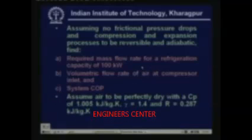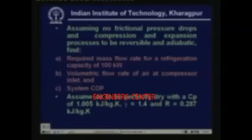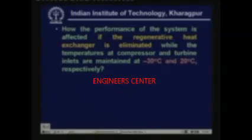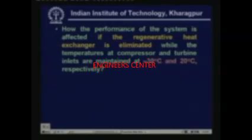For calculation purposes we assume air to be perfectly dry with a specific heat Cp of 1.005 kJ/kg·K, specific heat ratio gamma of 1.4, and gas constant R of 0.287 kJ/kg·K. The second part of the problem is to compare the performance of this system with a system which does not have a regenerative heat exchanger. For the simple system, the temperatures at the compressor and turbine inlet are minus 30 degree centigrade and 20 degree centigrade respectively, and pressures are 100 kilo Pascal and 1000 kilo Pascal.